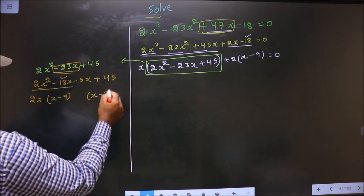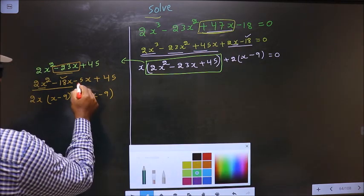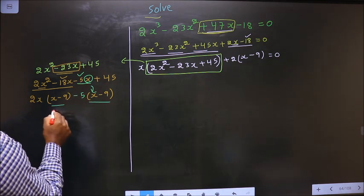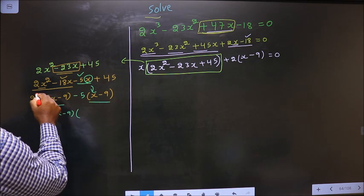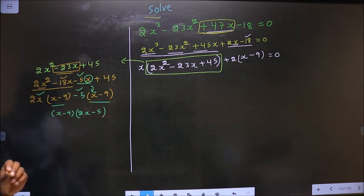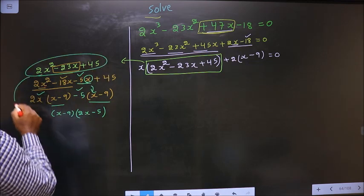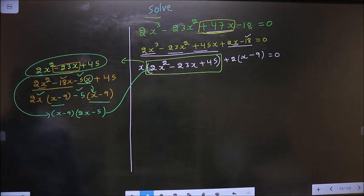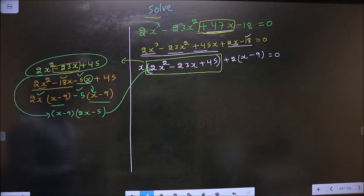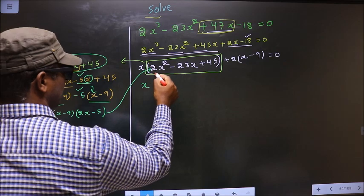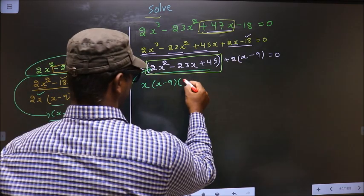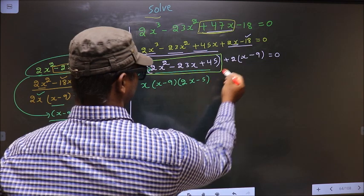Whatever we have got here, here also we should get the same thing. From this, x has gone inside, so outside you are left with minus 5. Now you take out x minus 9 common, so here you have 2x and here you have minus 5. In place of this quadratic, I will replace this over here. That is x times x minus 9 times 2x minus 5. Here no change.